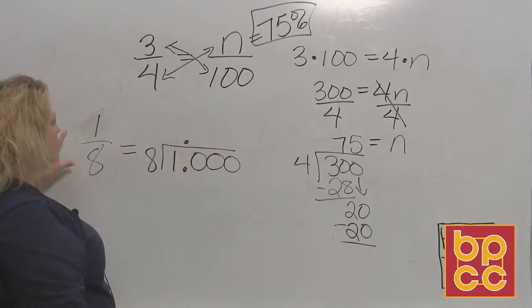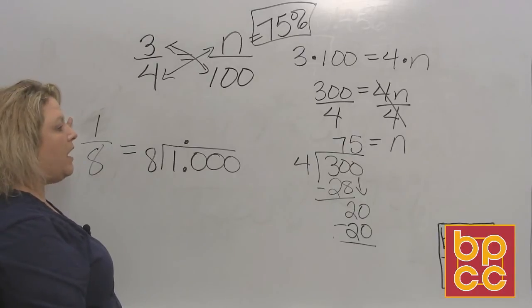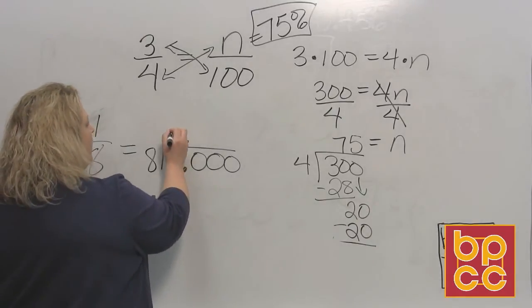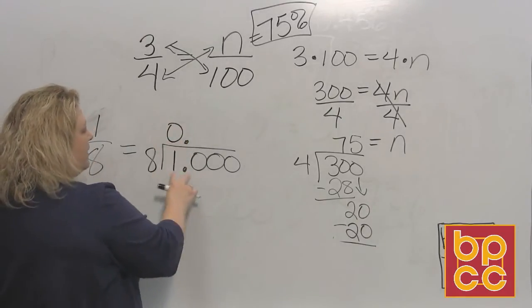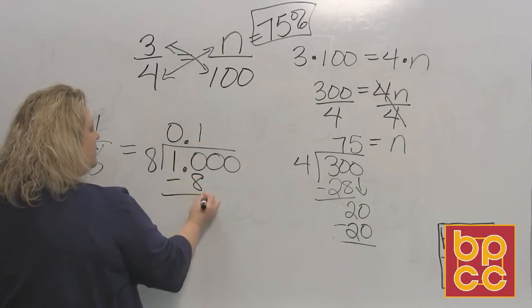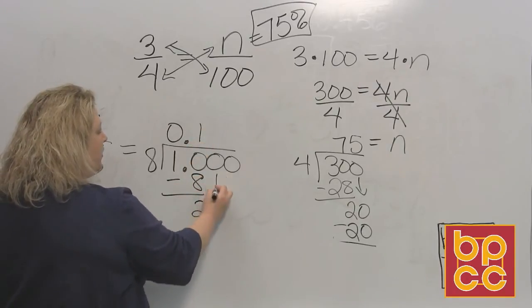Now I'm just doing division like we did in a module 2 or 3 times ago. And when I do this, 8 does not divide into 1, so I put the 0. 8 does divide into 10, it goes in there 1 time, which makes 8. That leaves me 2. Bring down the 0.